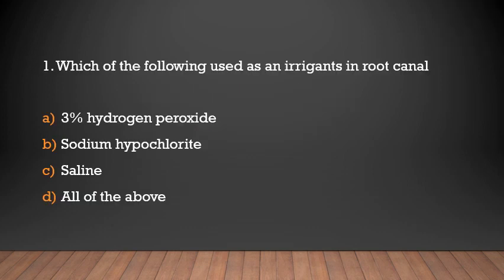Which of the following is used as an irrigant in root canal? Options: 3% hydrogen peroxide, sodium hypochlorite, saline, all of them.